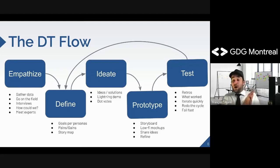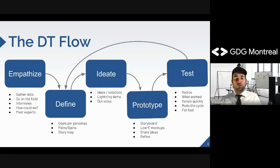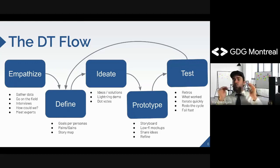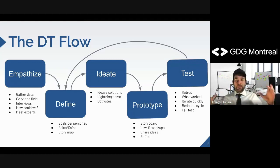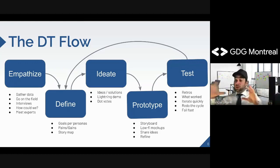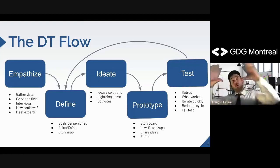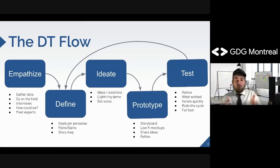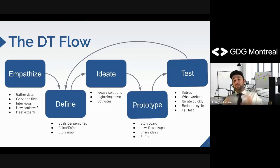Then we define — based on all the information gathered, we try to define who's the target, what we're trying to achieve, what are their pains and gains, and start building a big story map where the overall flow is drafted. Then we take portions of that big overall view and try to define things more precisely, making mock-ups, ideating, and inspiring each other to create the best possible solution.